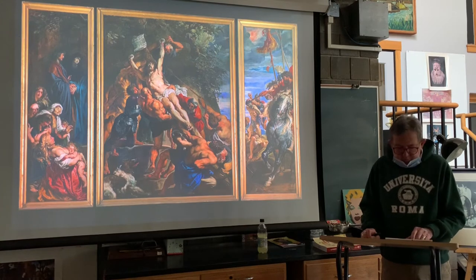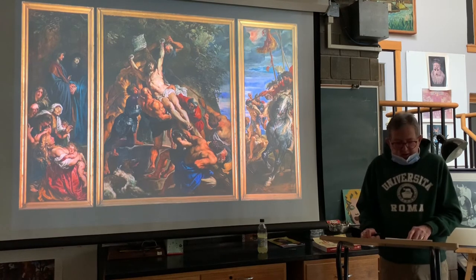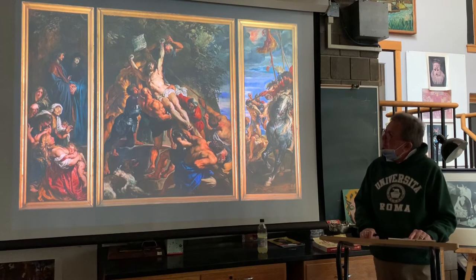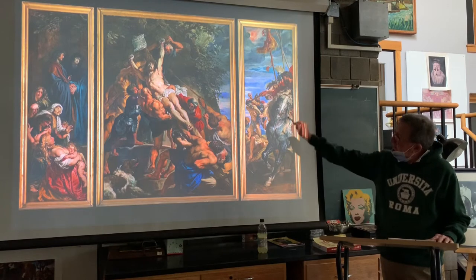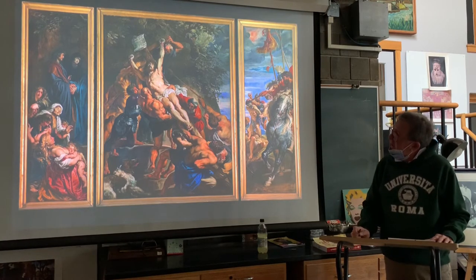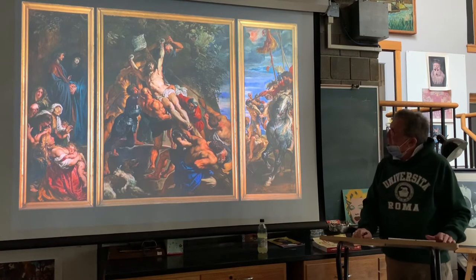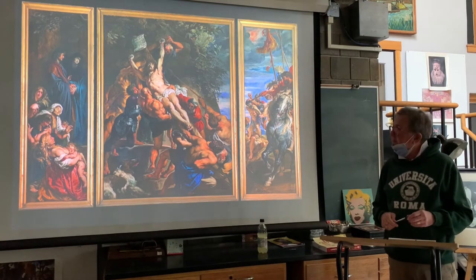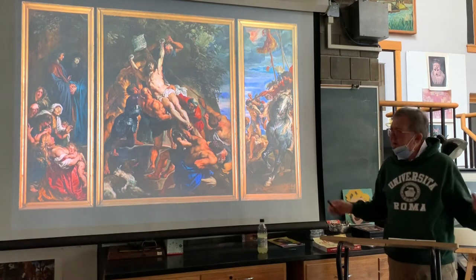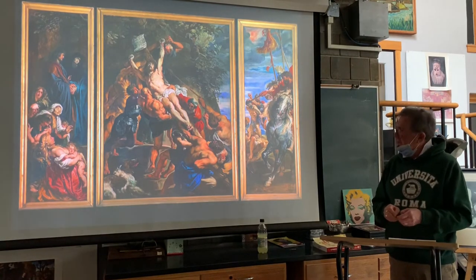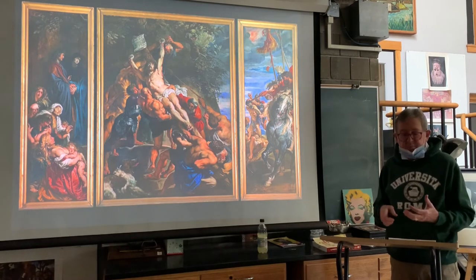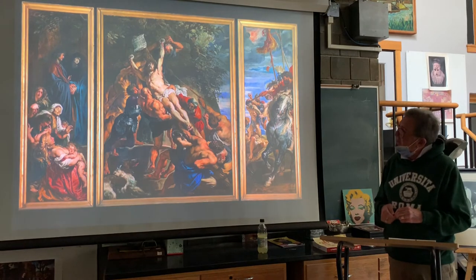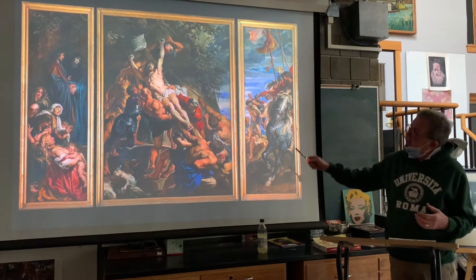Here we have Northern European Baroque art, and this artist is Peter Paul Rubens. This painting — actually only the middle panel of this triptych, a three-panel altarpiece — is in your book. Peter Paul Rubens was a celebrated artist, quite a celebrity in his lifetime. He hung out with all the aristocracy and government people. He was inspired by the musculature of Michelangelo's work from the Sistine Chapel ceiling, and he has a strong diagonal composition going on here.